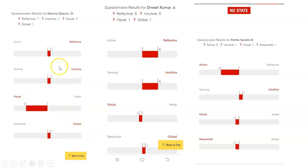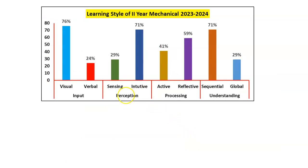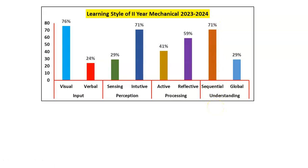Looking at the results, one student is more visual, more intuitive, and more active. I have consolidated results for second-year Mechanical Engineering students for whom I am presently teaching Engineering Thermodynamics in 2023-24. The analysis shows: 76% of students are visual and 24% are verbal. In terms of perception, 29% use sensing while 71% perceive intuitively. For processing, 41% are active learners while 59% are reflective. For understanding, 71% are sequential and only 29% are global.